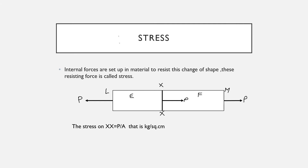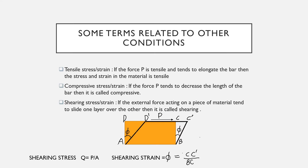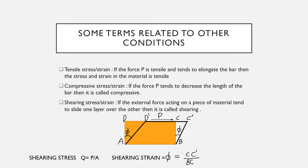The bar will undergo a change in length under the action of external forces P. L is the original length and delta L is the change in length, so strain E equals delta L upon L. We have now revised both stress and strain. Regarding types: if the force P is tensile and tends to elongate the bar, then the stress and strain in the material is tensile.